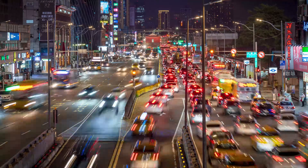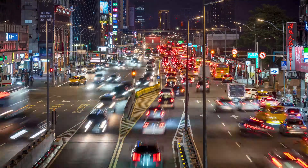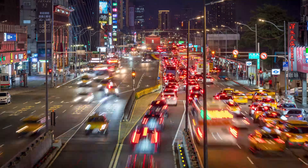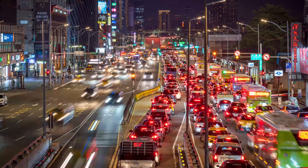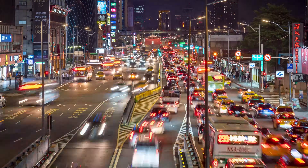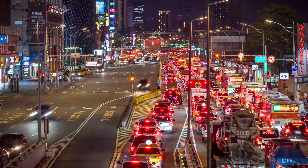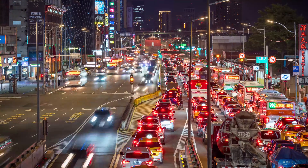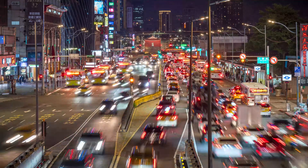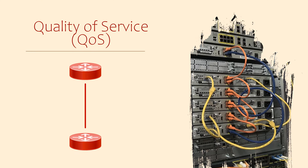Sometimes a network link will experience congestion. This is much like congestion you might experience on the roads. When they're filled to capacity, the traffic speed and performance suffers. In times of congestion, QoS gives priority to more important traffic. This is at the expense of less important traffic.